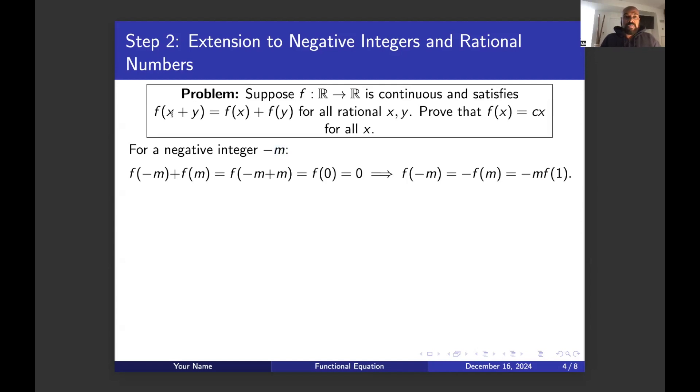So if we look at the actual instructions for our function, we'll have f of negative m plus f of m is equal to f of negative m plus m. Negative m plus m is zero, so this means we get f of zero, which we earlier computed is actually zero.